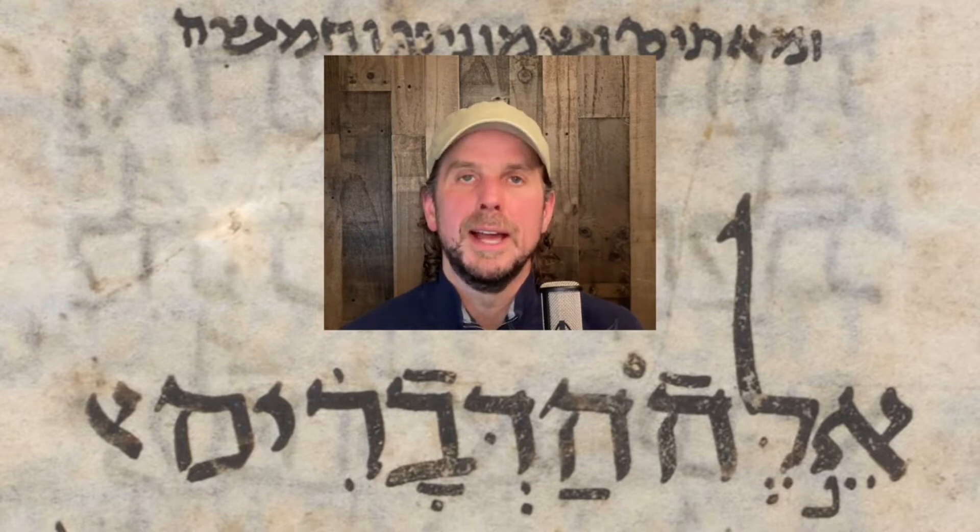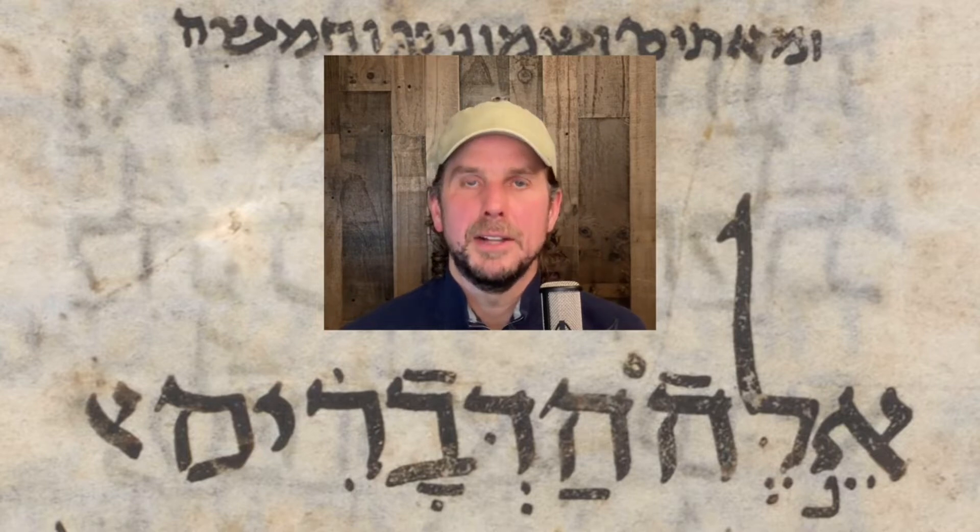Today, in ancient Torah manuscripts, we're going to look at the British Library OR 4445, Ele Hadvarim — 'These are the words' — the beginning of Deuteronomy 1. Let's dive in.